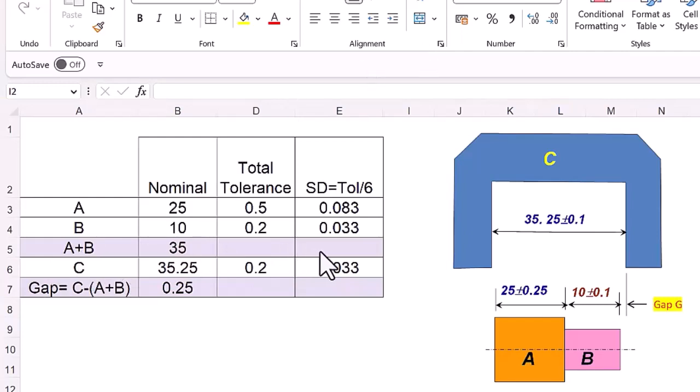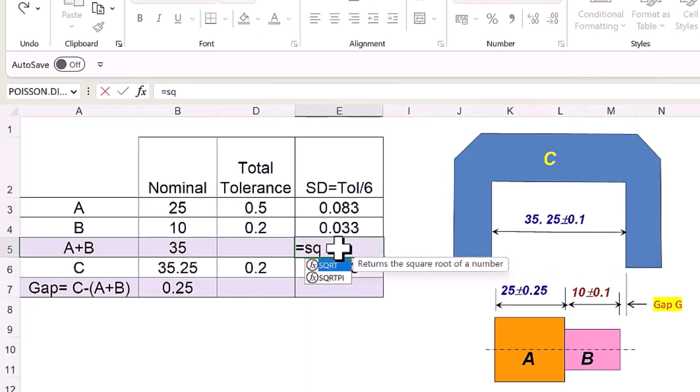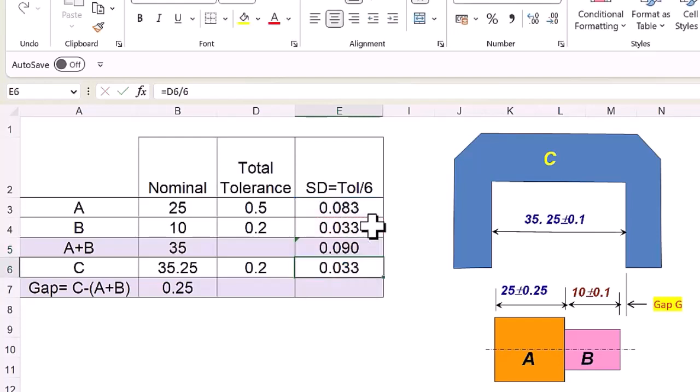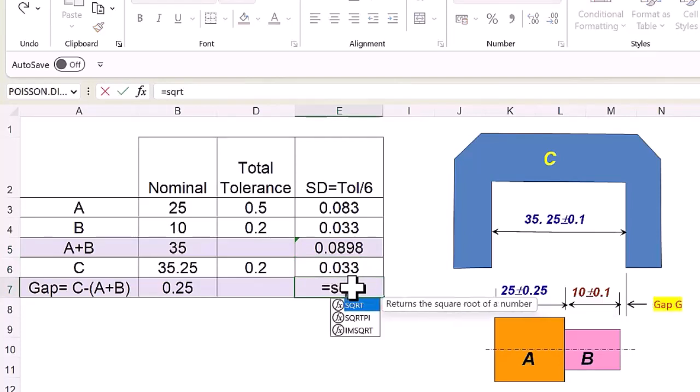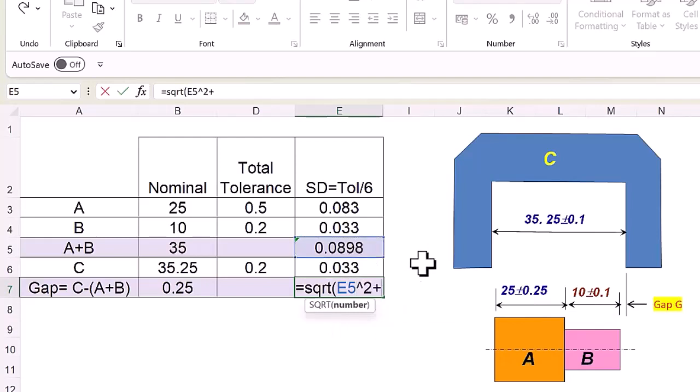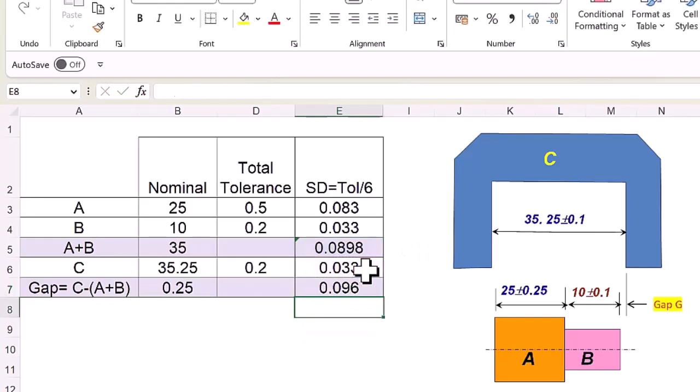To calculate standard deviation of A plus B, we will have to add variances of A and B and take a square root. We write equal to SQRT, standard deviation of A squared plus standard deviation of B raised to the power 2, and that gives us a rounded value of 0.0898. While we subtracted the value of A plus B from C for nominal value of the gap, for the standard deviation we still need to add the variances of A plus B and C. So standard deviation of the gap will be equal to SQRT of standard deviation of A plus B squared plus standard deviation of C squared, and that equals 0.096.